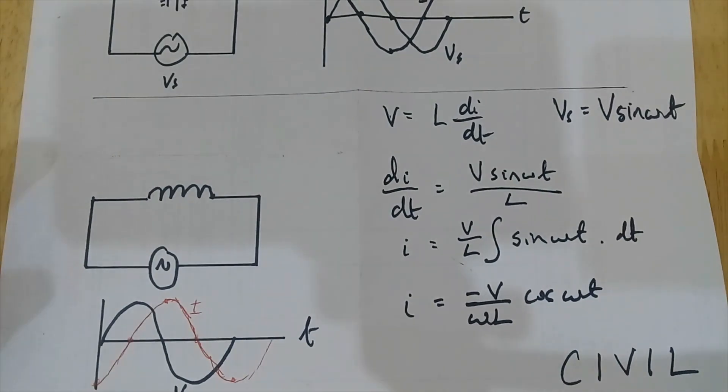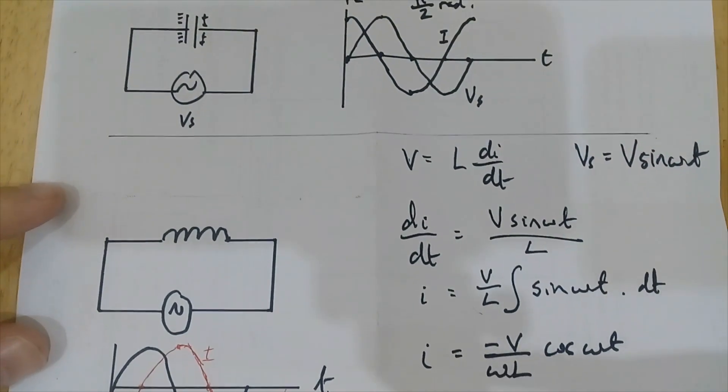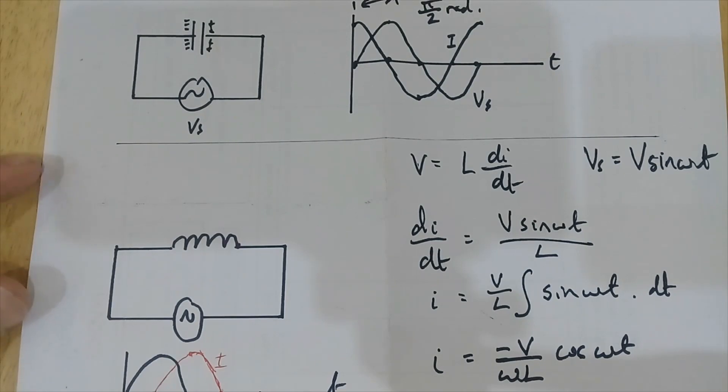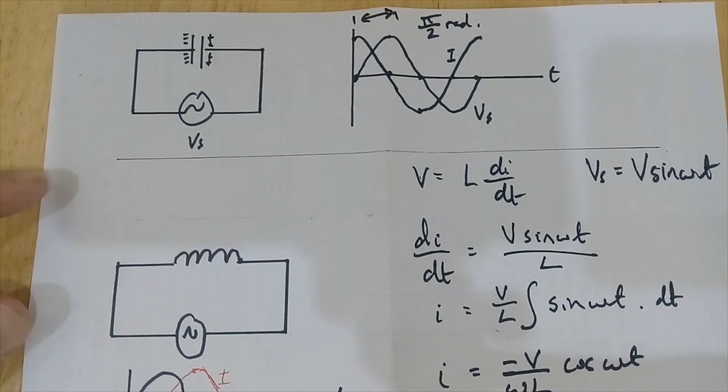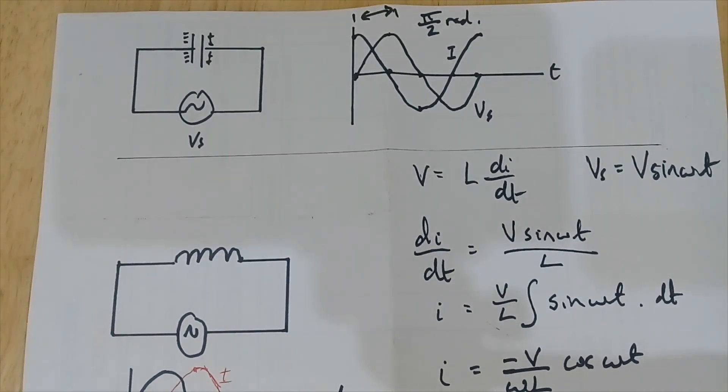I want to look more closely at why this is the case—why does the current in a capacitor lead the voltage and the opposite for the inductor. There are two simple explanations I can think of.